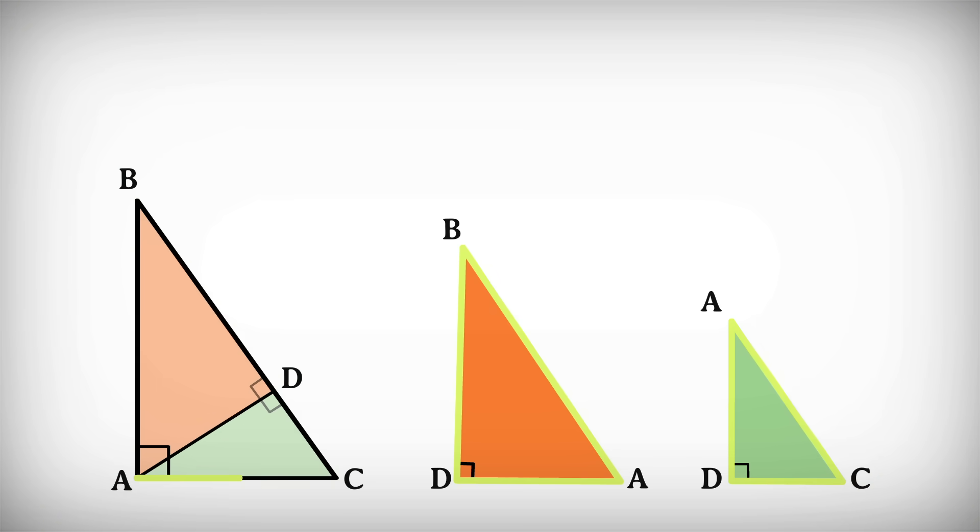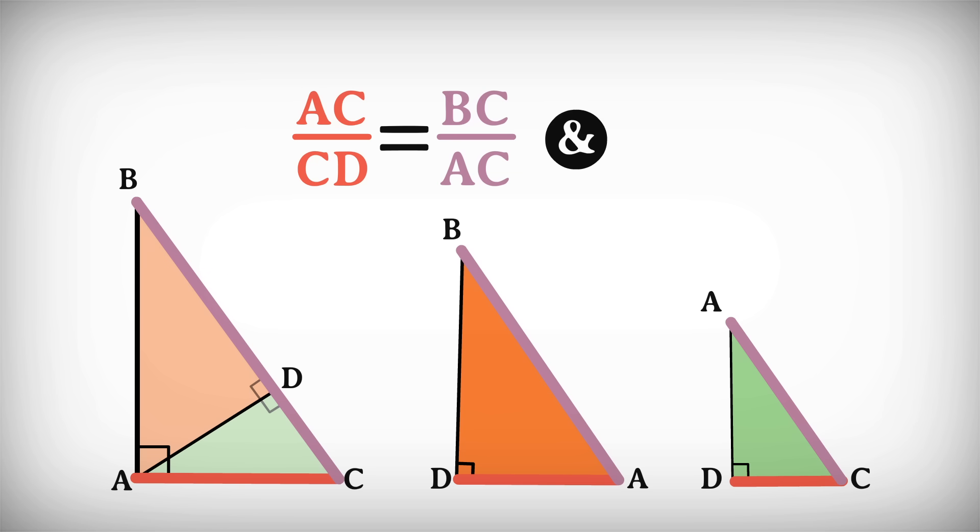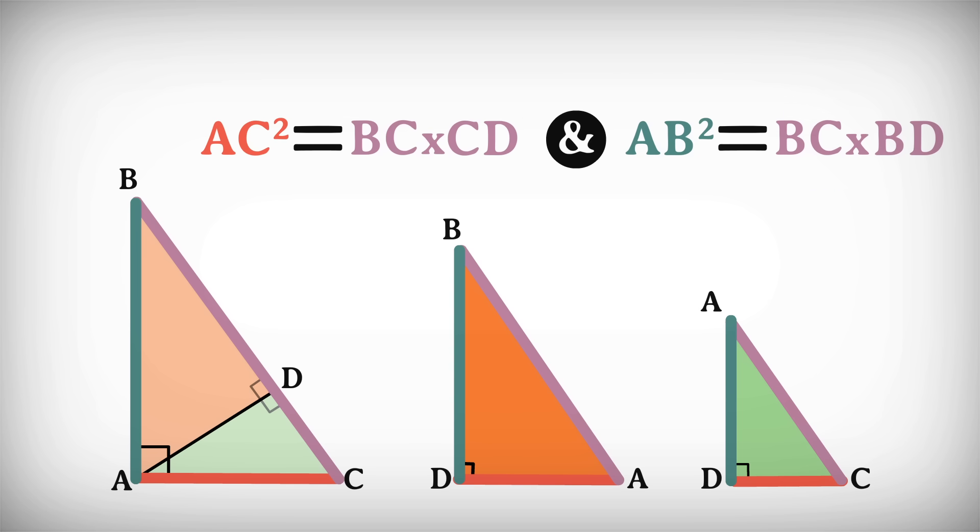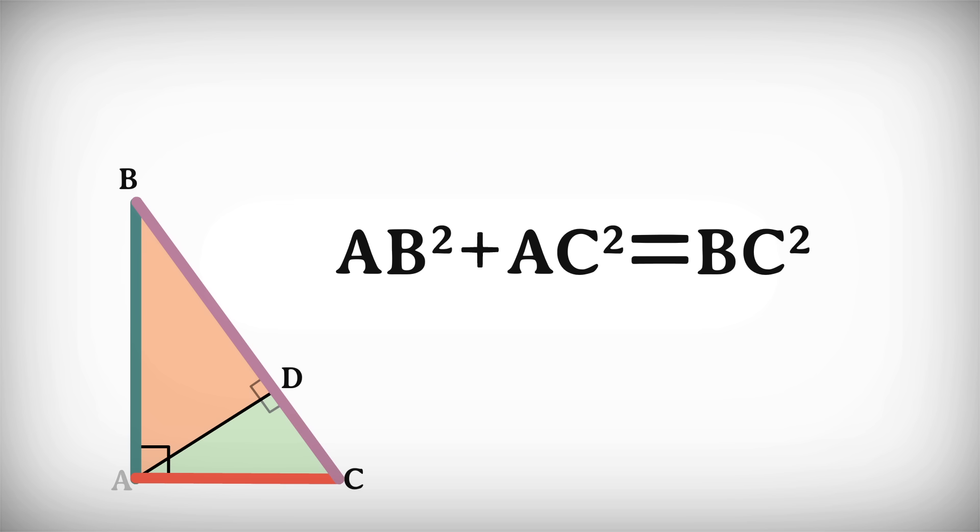So for these three similar triangles, you can write these expressions for their sides. Next, rearrange the terms. And finally, add the two equations together and simplify to get AB squared plus AC squared equals BC squared, or a squared plus b squared equals c squared.